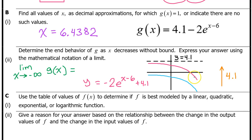Therefore, as x approaches negative infinity, g of x approaches 4.1. And that is the limit.